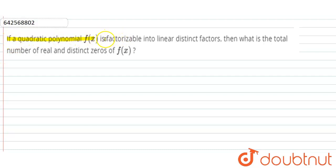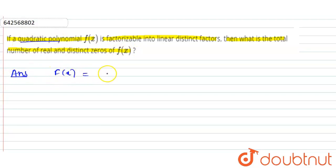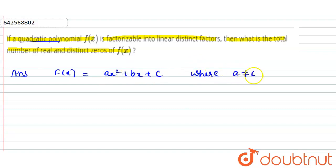Hello everyone. The question is: if a quadratic polynomial f(x) is factorizable into linear distinct factors, then what is the total number of real and distinct zeros of f(x)? In the solution, we have to take a quadratic polynomial, so we'll take f(x) in its general form, that is ax² + bx + c.